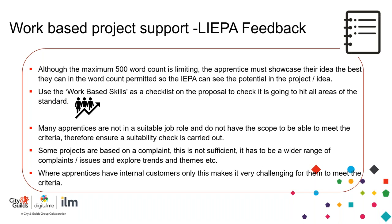Feedback from our lead independent assessors shows that many apprentices' job roles are not actually suitable and don't have the scope to meet the criteria. This is often down to recruitment — the job role the apprentice is doing won't lend itself to cover the KSBs accordingly. Please make sure that the job role the apprentice is going into is suitable and will provide the correct evidence to map across to all three key assessment areas, not just the project.